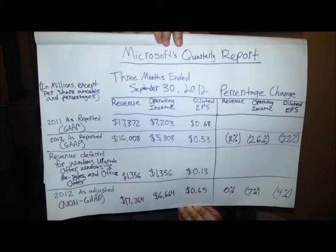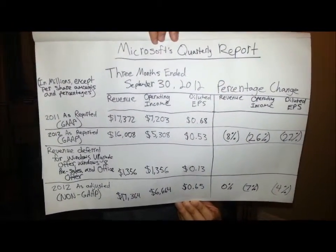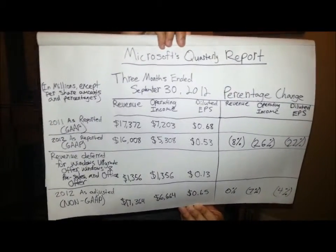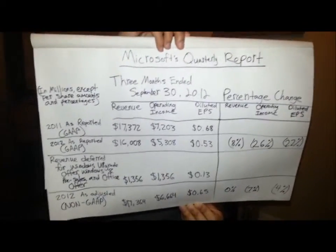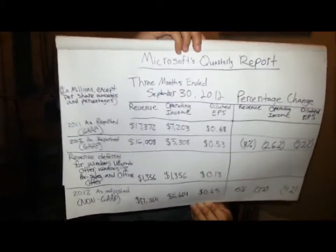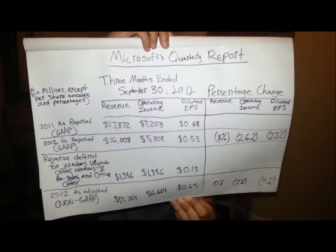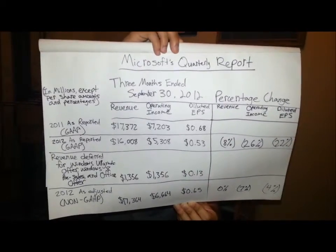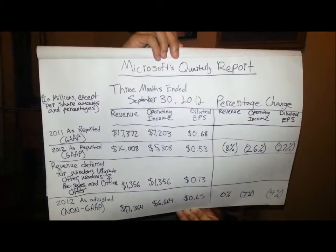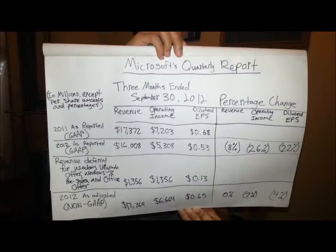Let's take a look at the graphic depicting quarterly earnings. The graphic depicts the quarterly report for September 30, 2012. The first topic is 2011 as reported GAAP, with revenue of $17,372 million. The next topic is 2012 as reported GAAP, with revenue of $16,008 million, $5,308 million for operating income, and $0.53 diluted earnings per share.